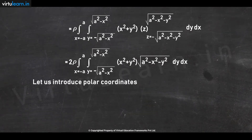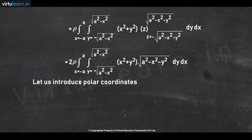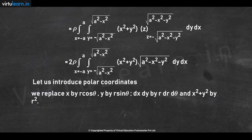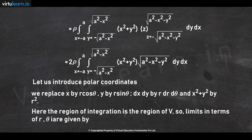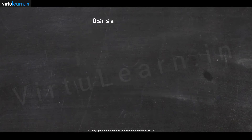We introduce polar coordinates here. The reason is that the region is that of a circle x² + y² = a². So we replace x by r cos θ, y by r sin θ, and dx dy by r dr dθ. The limits for r and θ will be 0 ≤ r ≤ a and 0 ≤ θ ≤ 2π.